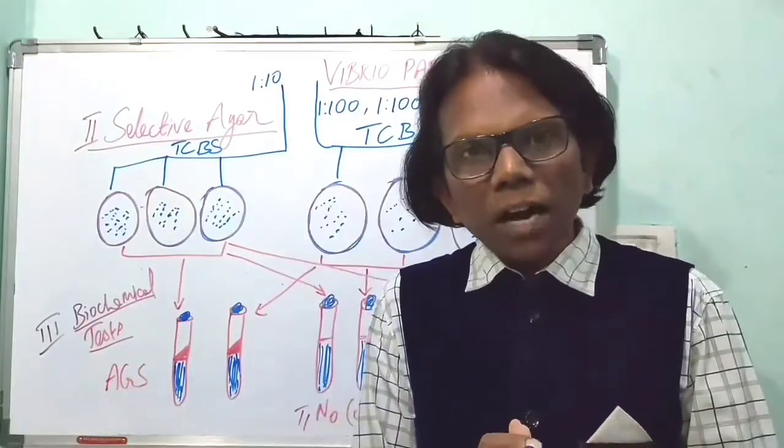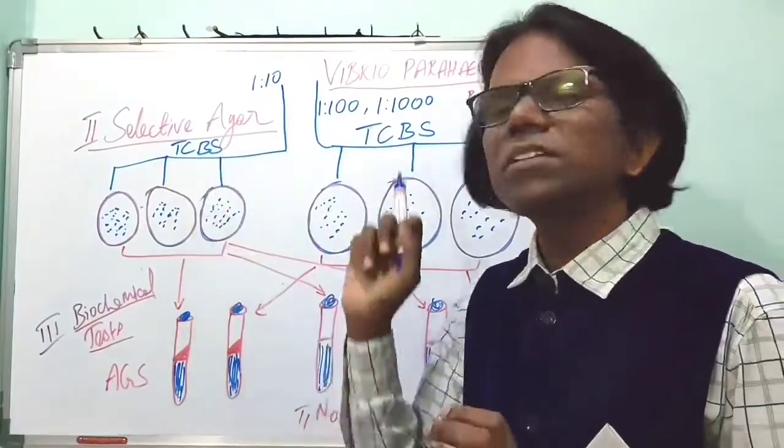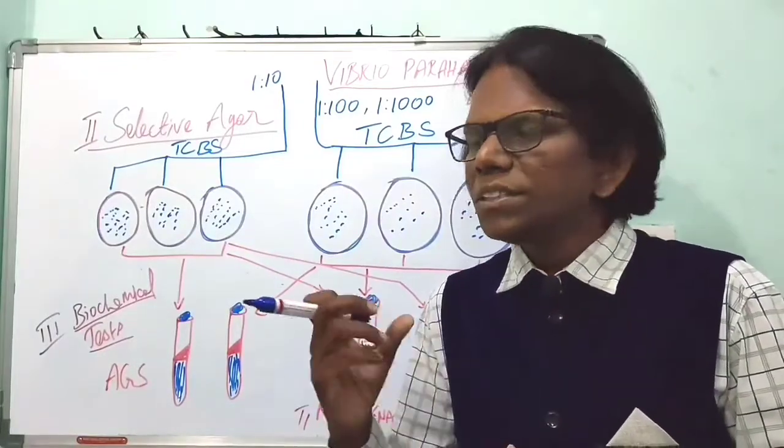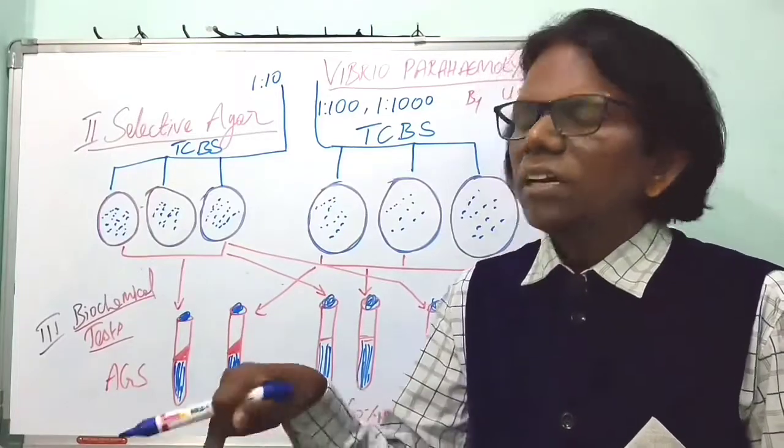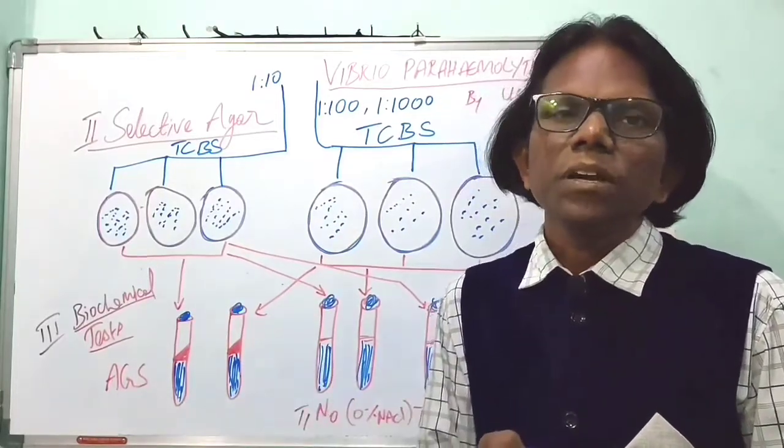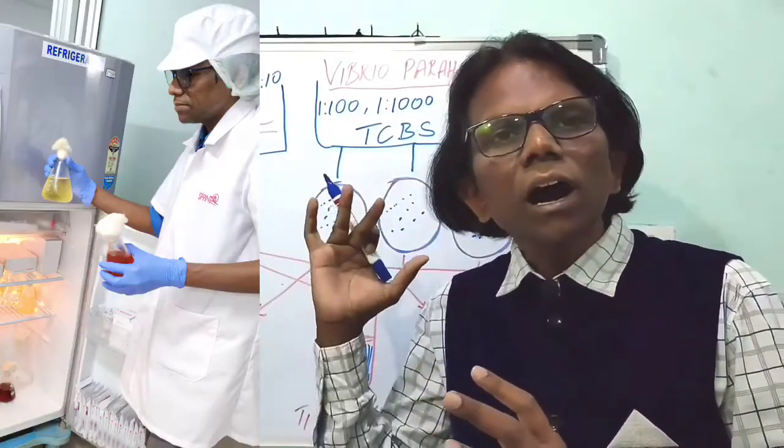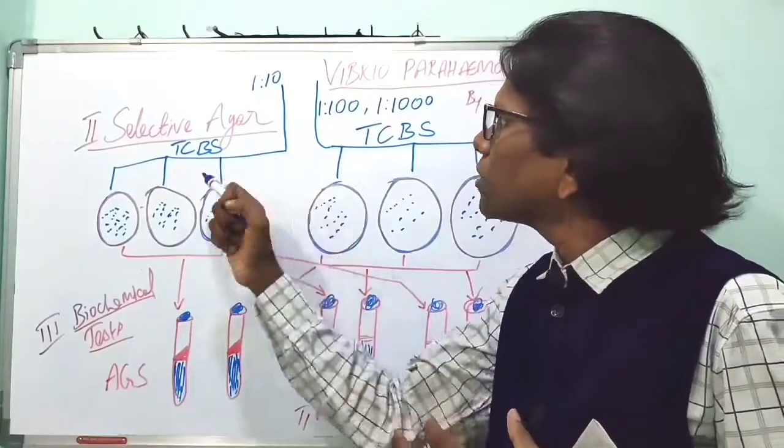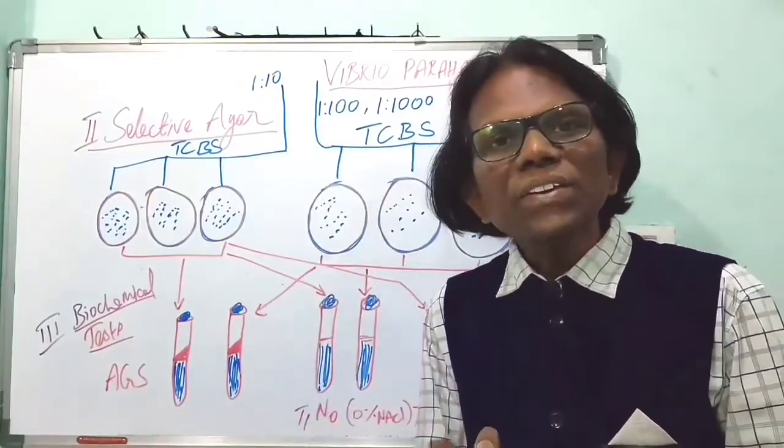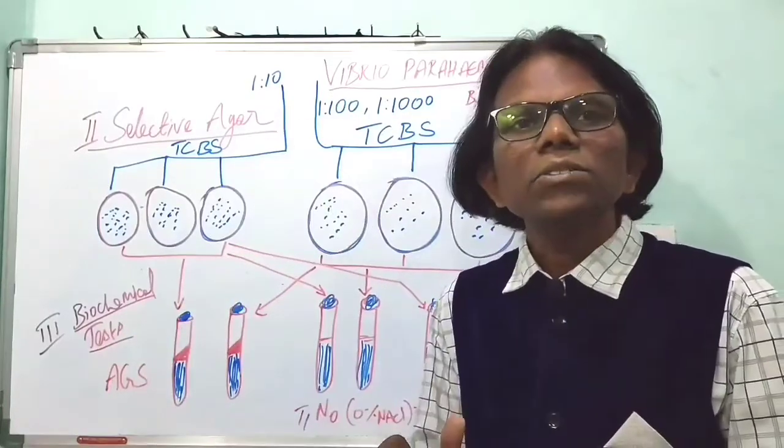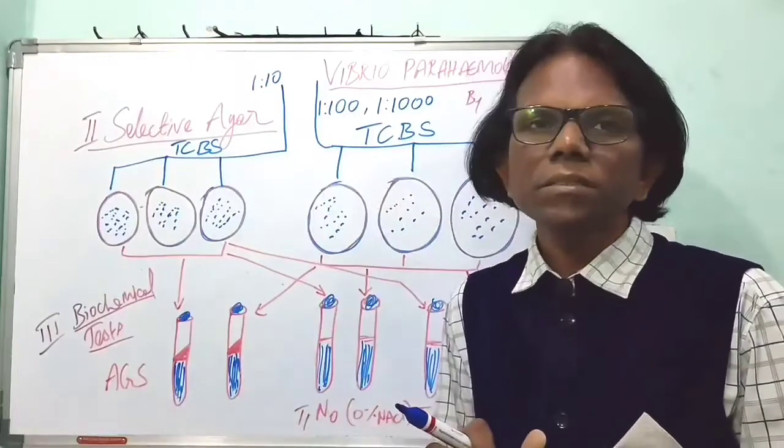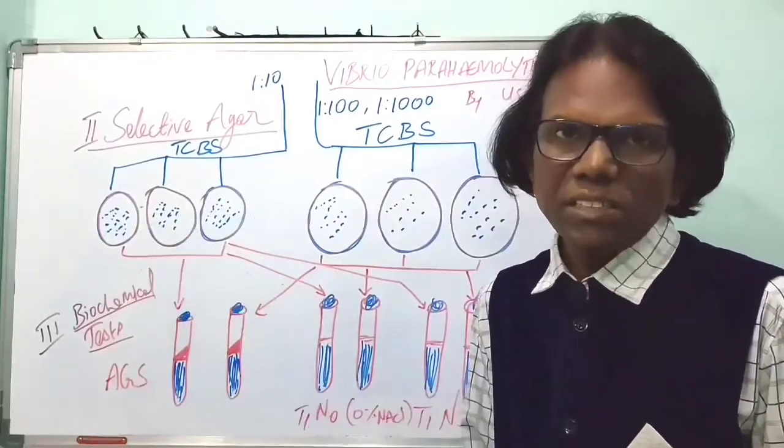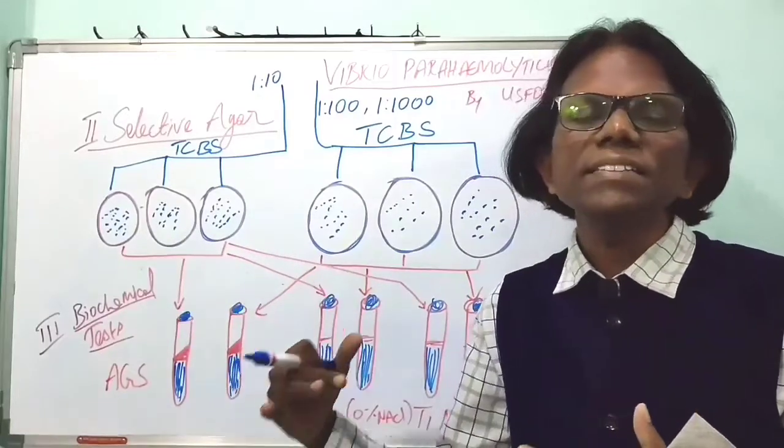Take 88.1 grams of dehydrated thiosulfate citrate bile salt sucrose agar medium and dissolve in 1 liter of distilled water. Gently boil the media. Agitate with constant agitation with stirring rod until dissolving all the media. We should not autoclave TCBS because autoclaving will denature the media. That is why we only boil the TCBS media. After boiling, pour the medium 15 to 20 ml in petri dishes to make surface dried TCBS plates.